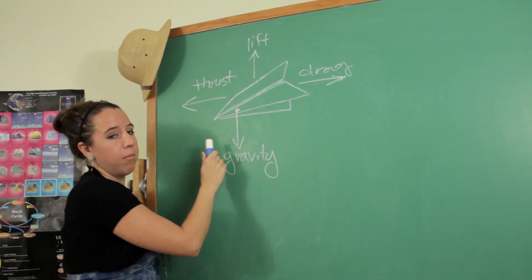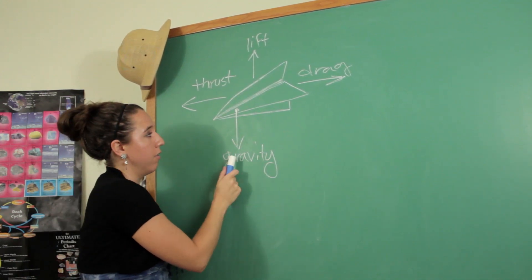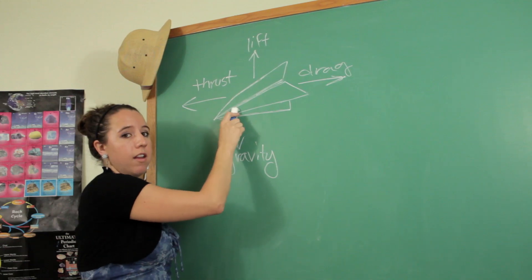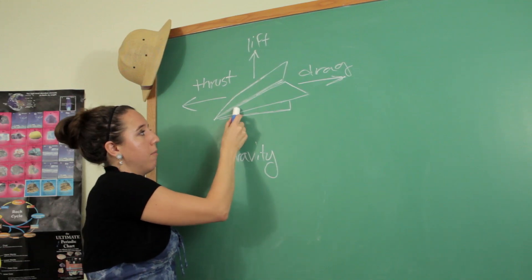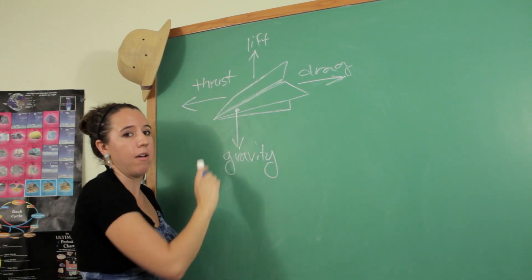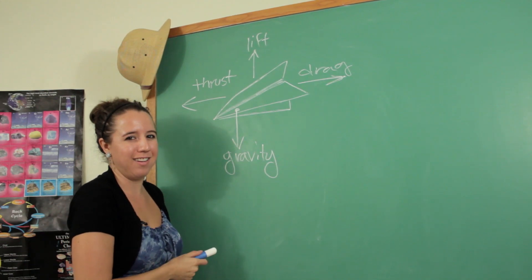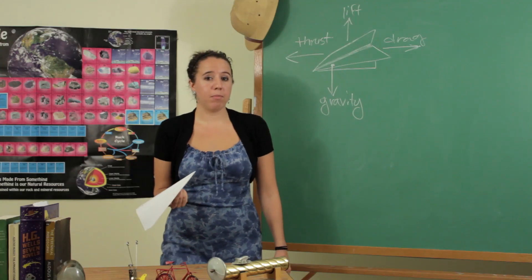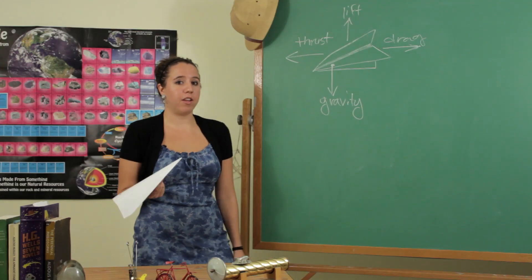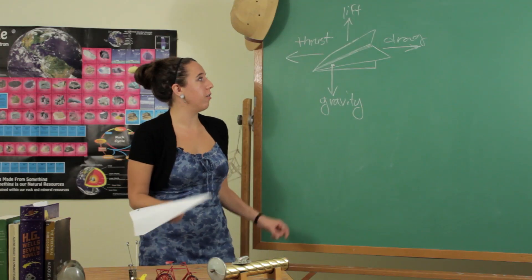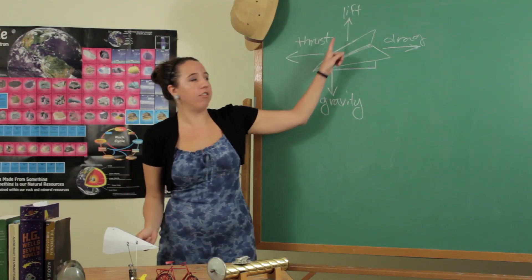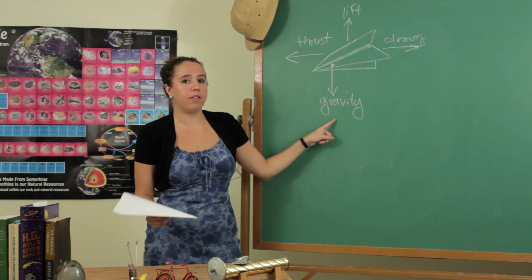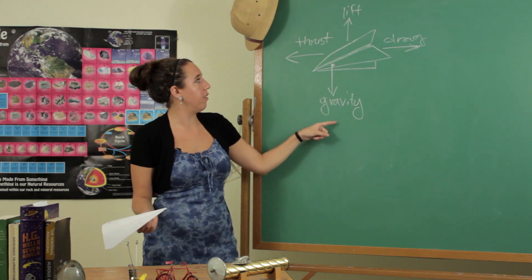Notice that the acceleration due to gravity comes from this little dot — that is the center of mass, and that will come into play in just a second. When you make a paper airplane, essentially what you're trying to do is change these three quantities to your advantage.